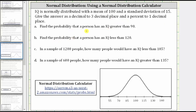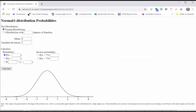We can indicate the probability that a person has an IQ greater than 90 as the probability that X is greater than 90. To determine the probability, we will use the free online normal distribution calculator linked below. Going to the calculator, we first select normal distribution at the top.